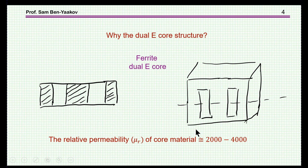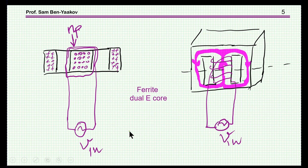Let me first explain why I've chosen this E-core. This is a closed structure — here's the cross-section. The ferrite material has a very high relative permeability, about 2,000 to 4,000, and therefore all the flux is confined within the core. When I have an excitation, we see the flux coming out here and going in here, confined to the core, with very little stray magnetic flux outside.